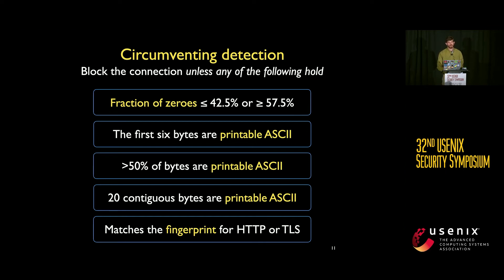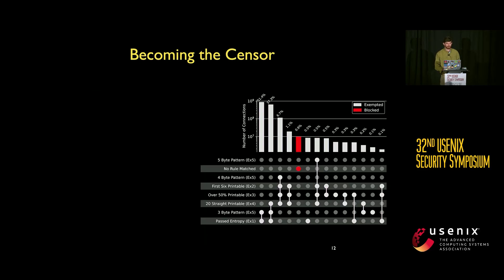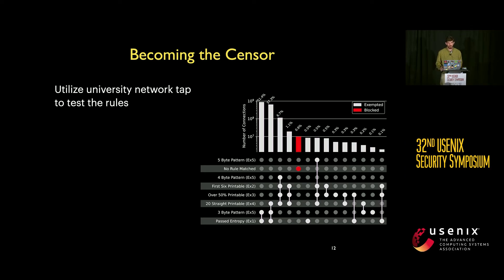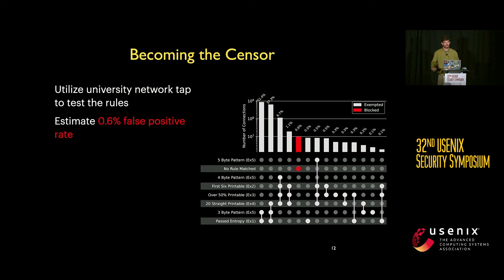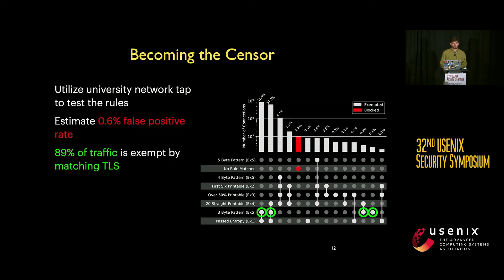We then evaluated how effective these rules are using a university network tap, observing and labeling connections by which rules the censor would use to exempt the traffic. We found that about half a percent of traffic does not match any of the sensor's exemption rules. Since the network we tested doesn't experience censorship, it's unlikely users there are using circumvention tools, so we can reasonably treat this as the false positive rate. Additionally, 89% of traffic is exempt simply by matching TLS — meaning the censor can reduce computational complexity by checking just the first three bytes of all connections first.